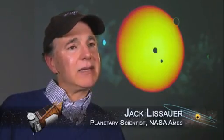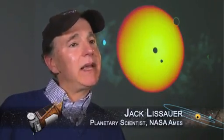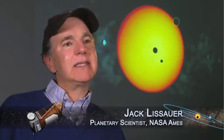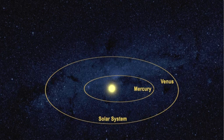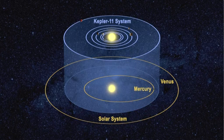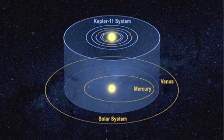The Kepler 11 planetary system is amazing. It's amazingly compact. It's amazingly flat. There's an amazingly large number of big planets orbiting close to their star. We didn't know such systems could even exist.